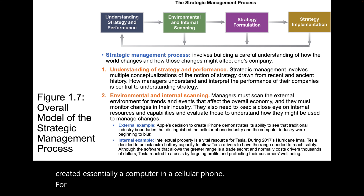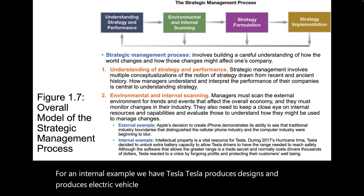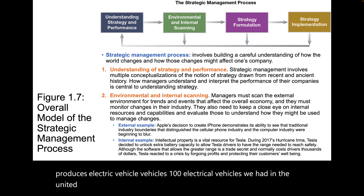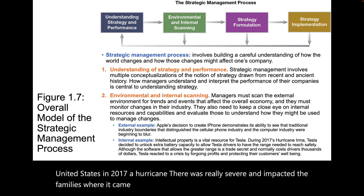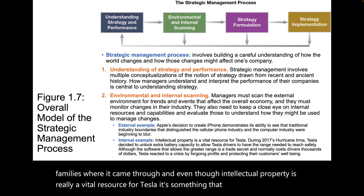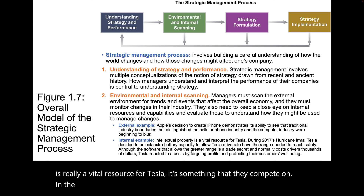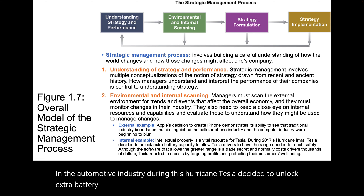For an internal example, we have Tesla. Tesla designs and produces 100% electric vehicles. In the United States in 2017, a hurricane was really severe and impacted the families where it came through. And even though intellectual property is a vital resource for Tesla — something they compete on in the automotive industry — during this hurricane, Tesla decided to unlock extra battery capacity for Tesla owners so they would have a broader range.